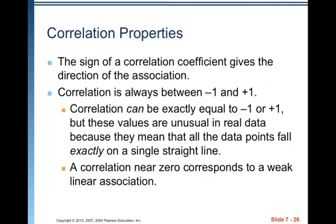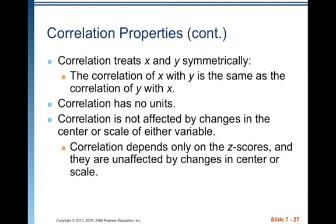A correlation near 0 corresponds to a weak linear association. Correlation treats x and y symmetrically — the correlation of x with y is the same as the correlation of y with x. Correlation has no units and is not affected by changes in the center or scale of either variable. Correlation depends only on the z-scores, and they are unaffected by changes in center or scale.